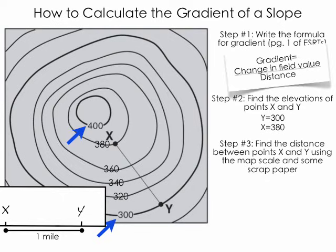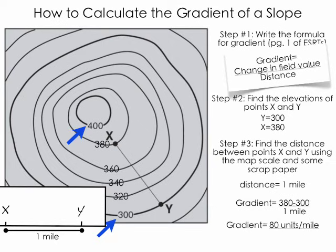So now we have all the numbers we need, and we can plug them simply into the formula. So the distance is one mile. The elevation of Y is 300, and the elevation of X is 380. So, if we plug them in, we get gradient equals 380 minus 300. That would be the change in field value, divided by the distance between X and Y, which is equal to one mile. Then we go to our calculator and figure it out, and the gradient becomes equal to 80 units per mile.